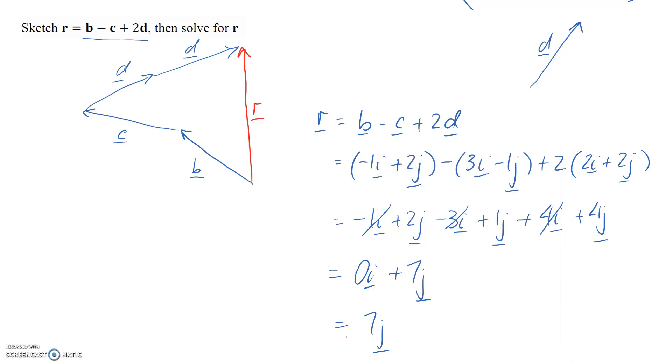It's got a length of 7 and it's in the positive y direction, which is what we've got here. So that all looks good. That means my final answer is this sketch and this answer for the resultant r.